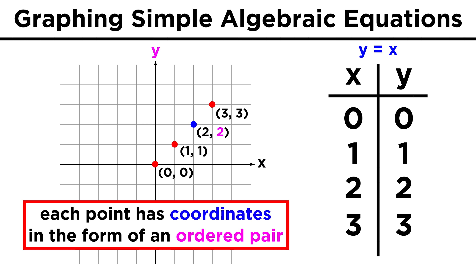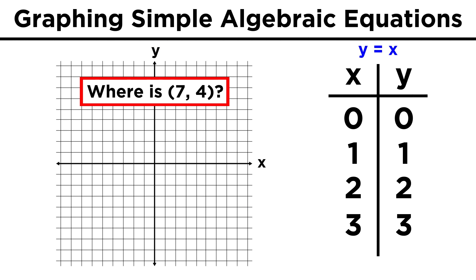If we want to find seven comma four, we start at the origin and go seven to the right, then up four. If we want to find negative three comma negative six, we start at the origin and go three to the left and six down, as left and down are the negative directions for x and y respectively.